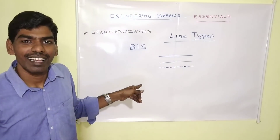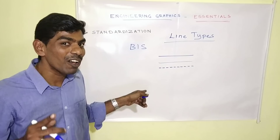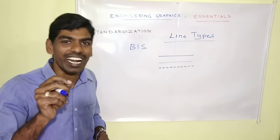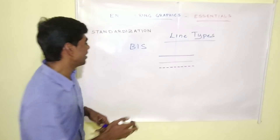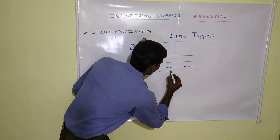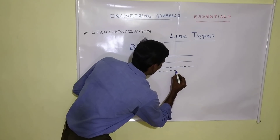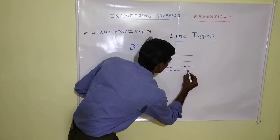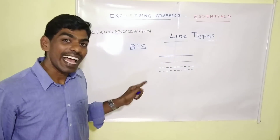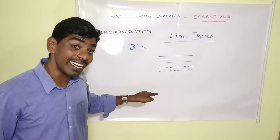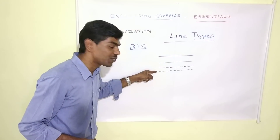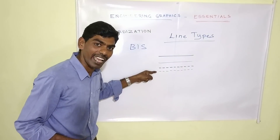A line made of dashes, we call it a dashed line. We have two types: dashed line thick and dashed line thin.